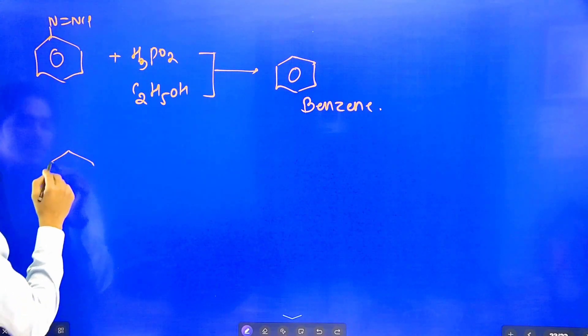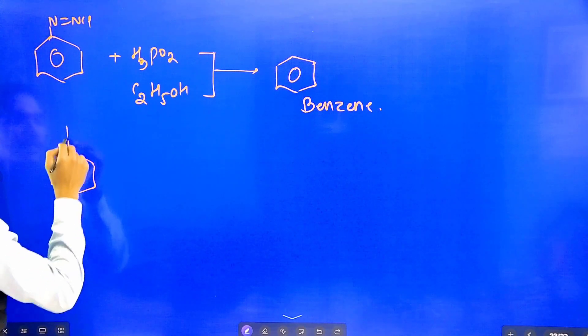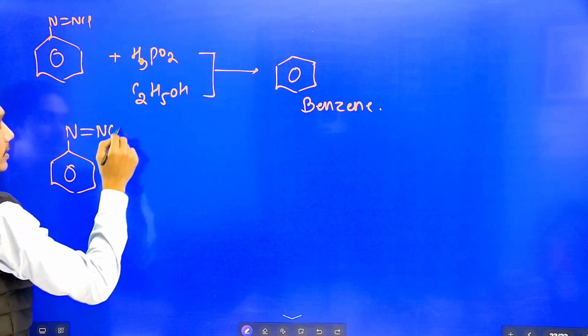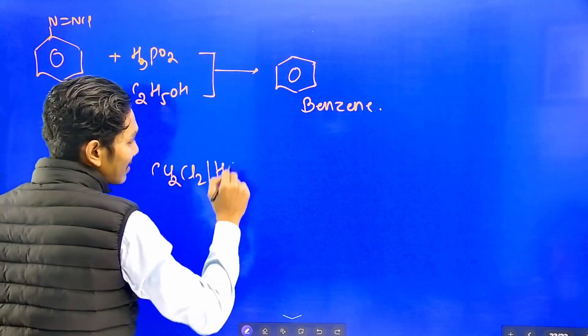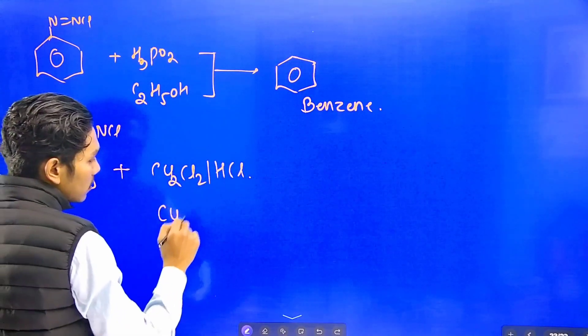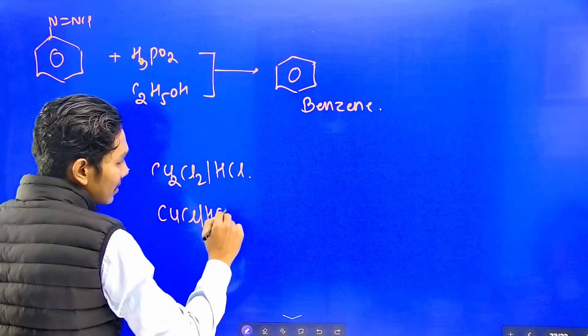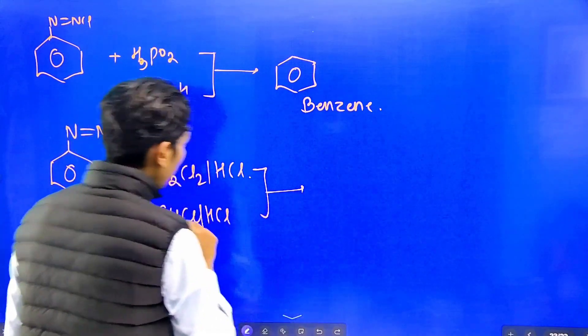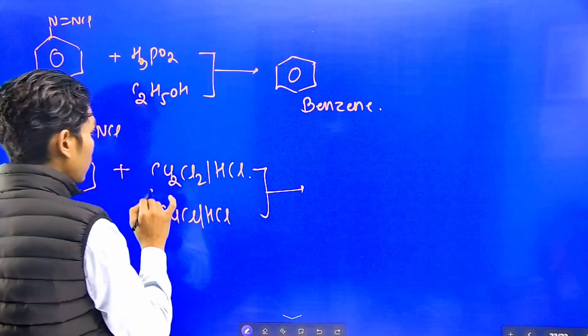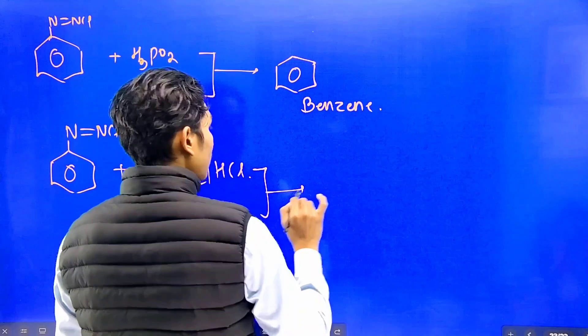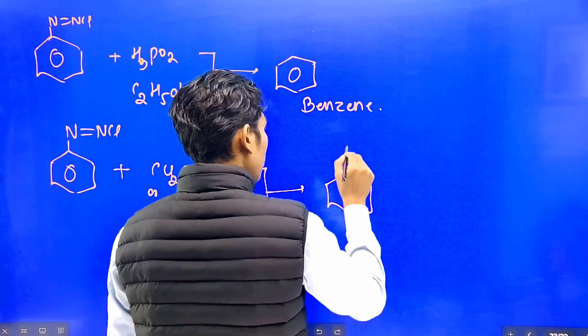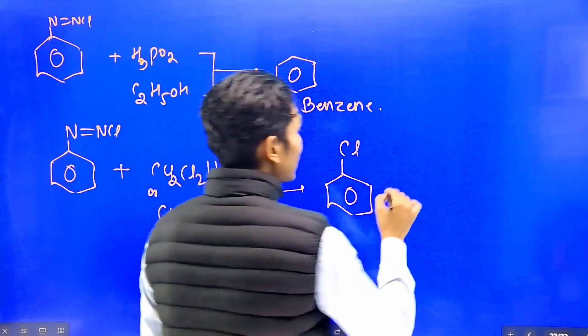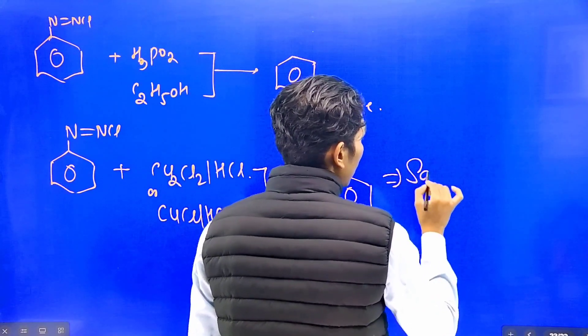When benzene diazonium salt, N double bond NCl, is reacted with Cu2Cl2/HCl or CuCl/HCl, then chlorobenzene is formed. This reaction is known as Sandmeyer reaction.